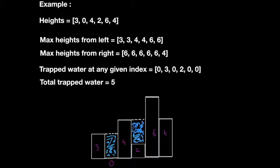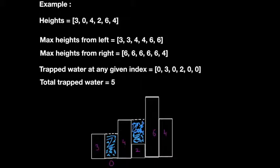Let's take another example with heights 3, 0, 4, 2, 6, 4. From left to right you calculate the maximum height so far, and from right to left you calculate the maximum height so far. The total trapped water at any given index: while standing at height 3 it is 0, because a single building cannot hold any water. Moving through 0, 4, 2, 6, and 4, we will store around 5 units of water total.